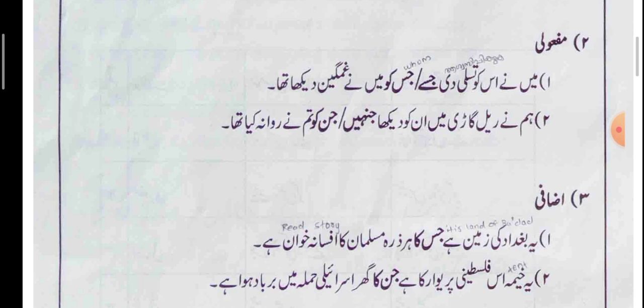Second example of مفعولی condition: ہم نے ریل گاڑی میں ان کو دیکھا جنہیں / جن کو تم نے روانہ کیا تھا — We saw a person on the train whom you had sent off. So Isme Maasool in مفعولی condition: singular is جسے یا جس کو, and plural is جنہیں یا جن کو.